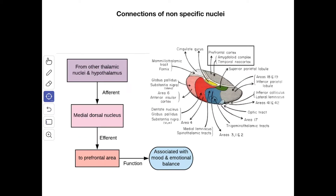Next we'll see the connections of the medial dorsal nucleus. From other thalamic nuclei and the hypothalamus you get the afferent, which terminates into the medial dorsal nucleus. From here the efferent goes to the prefrontal area. The function is it is associated with mood and emotional balance.